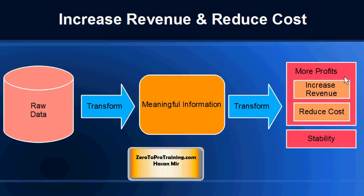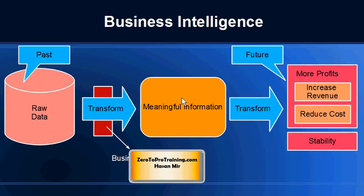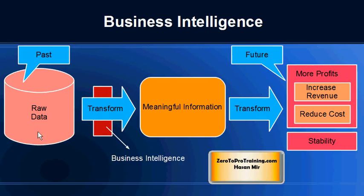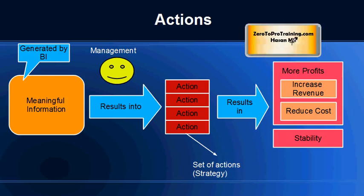Typical objectives of a company include more stability and more profits in the future. More profits could mean an increase in revenue or a reduction in cost or expenses. So coming back to the original definition: business intelligence helps you analyze your past and come up with strategies for the future. Your past is stored in the form of raw data. This needs to be analyzed, and business intelligence is what converts this raw data into meaningful information.